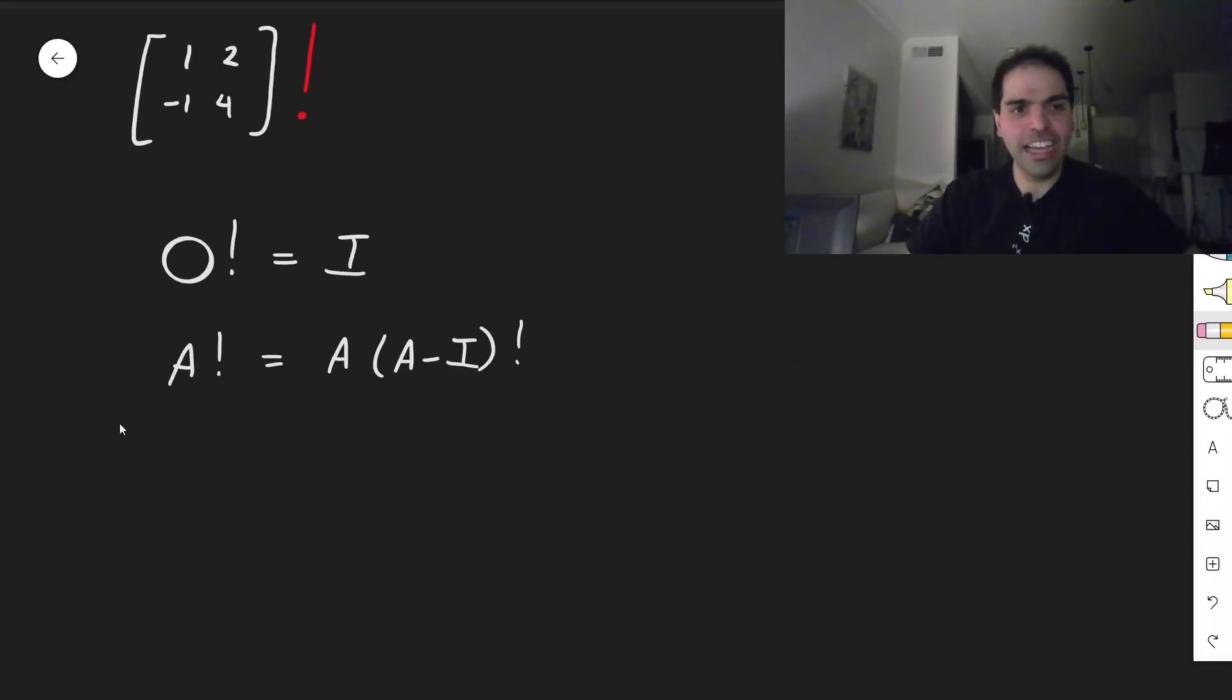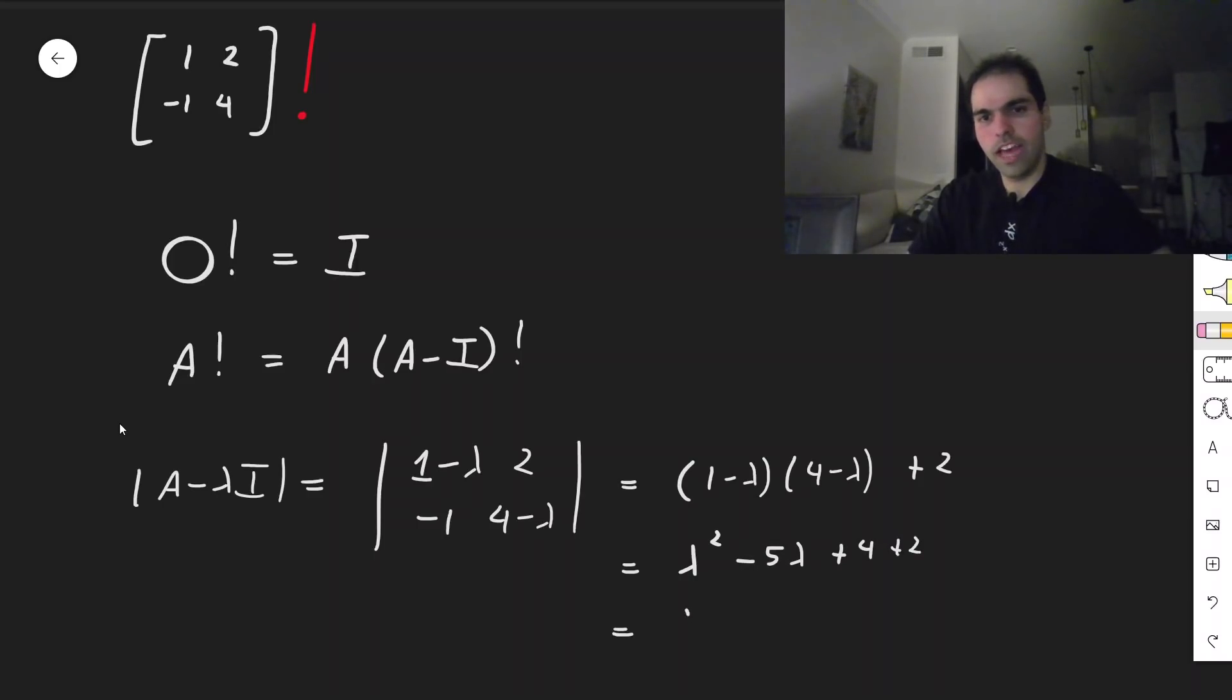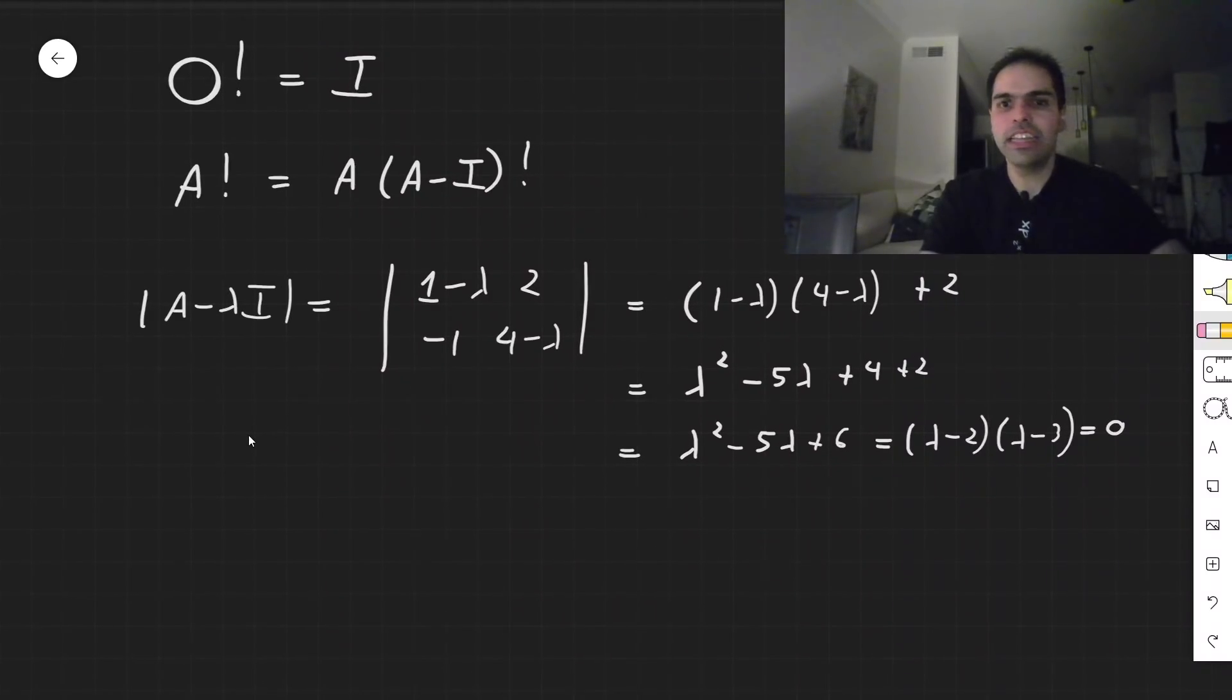And for this, let's first find the eigenvalues. So let's do the determinant of A minus lambda I. So the determinant of [1 - λ, 2; -1, 4 - λ]. Calculate that. So (1 - λ)(4 - λ) and then plus 2, which I believe becomes λ² - 5λ + 4 + 2. So λ² - 5λ + 6, which becomes (λ - 2)(λ - 3). You set that equal to 0, and you essentially get that the eigenvalues are λ = 2 and λ = 3.